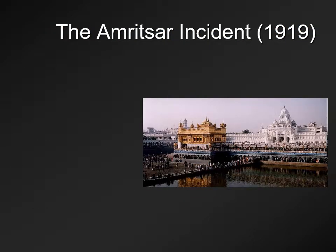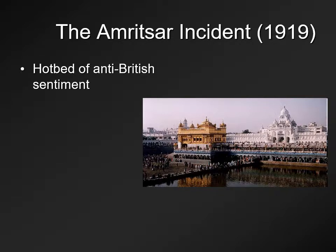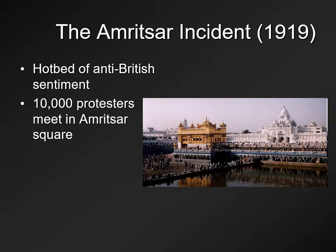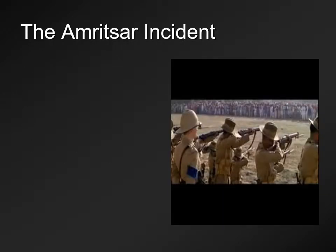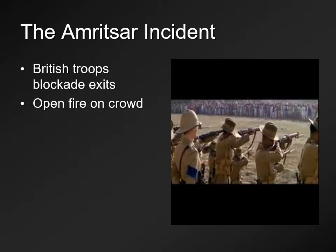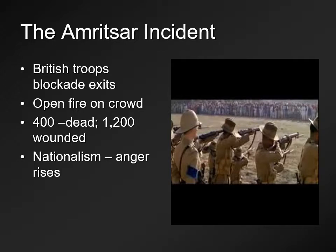The Indian nationalists and the Amritsar incident — what became known as the Amritsar incident — took place in northern India, near the current Pakistani-Indian border. This was a hotbed of anti-British sentiment. About 10,000 protesters met in the main square of the town called Amritsar, a significant town with a golden temple — an important icon for Sikhs. The British said they were breaking the law — no meetings allowed — and sent troops to blockade the exit, then opened fire on the crowds. Soldiers there may have been on edge, but there was no fighting against the British at this particular incident.